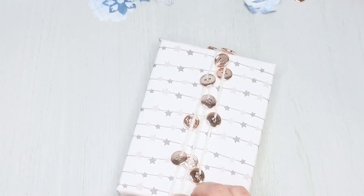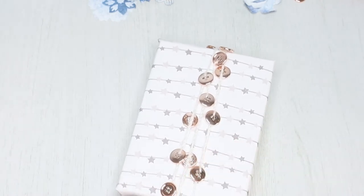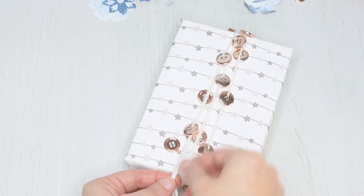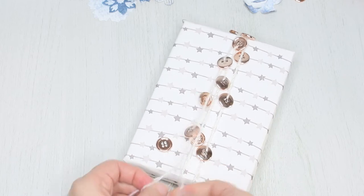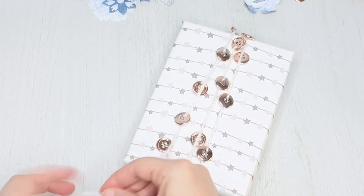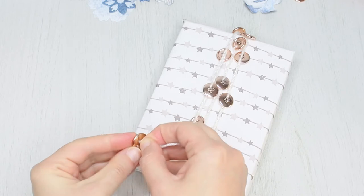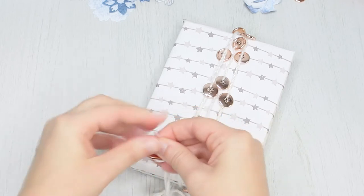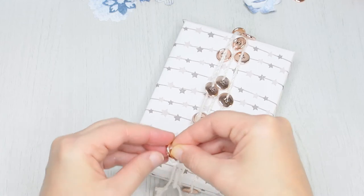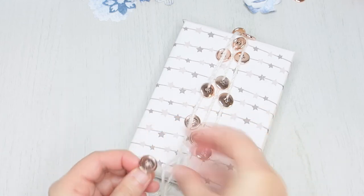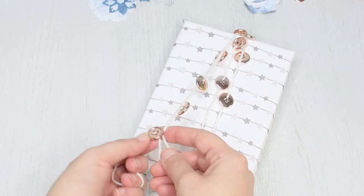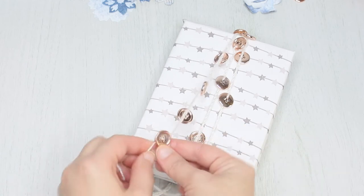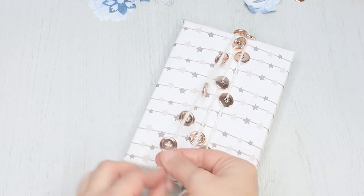So I take the final button. This time I'm gonna pass the thread through two buttonholes so it will stay flat. After adding the final button braid like two or three more times.